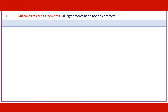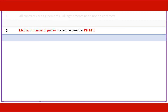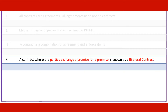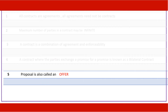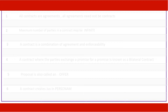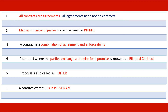All contracts are agreements; all agreements need not be contracts. The maximum number of parties in a contract may be infinite. A contract is a combination of agreement and enforceability. A contract where the parties exchange a promise for a promise is known as a bilateral contract. A proposal is also called an offer. A contract creates jus in personem.